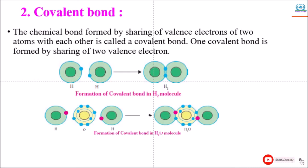Second chemical bond is covalent bond. The chemical bond formed by sharing of valence electrons of two atoms with each other is called covalent bond. One covalent bond is formed by sharing of two valence electrons. Formation of covalent bond in hydrogen: both hydrogen atoms have one electron. By sharing this, they form a hydrogen molecule.